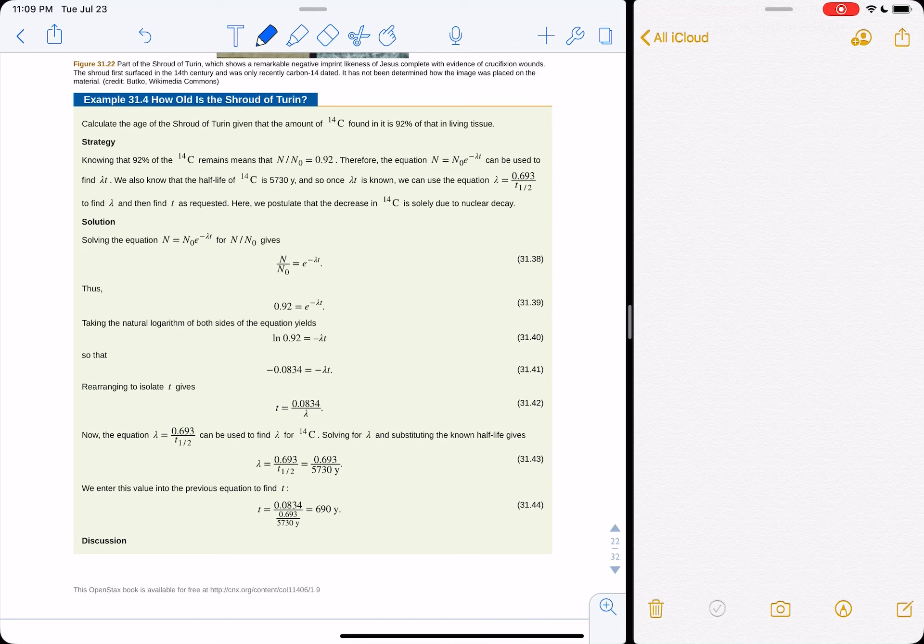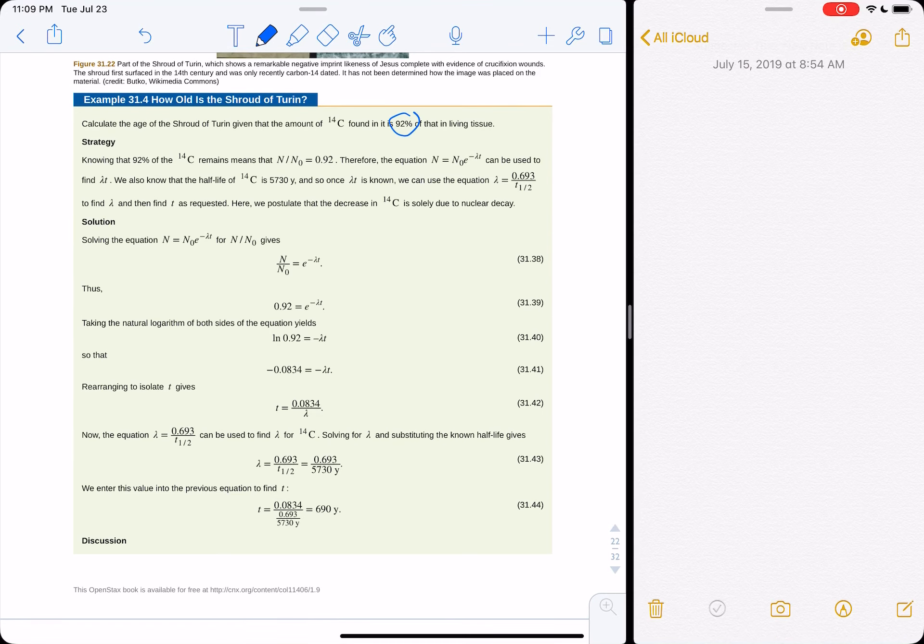So there was a sample that was cut out of this thing and it found that there was 92% of the carbon-14 was remaining. So if 92% is there, that means n over n0 is 92, or 0.92. So 92% of the stuff is still there. So then we can use this equation and we know the half-life of carbon-14 is 5,730 years, which means if we started with a pile of carbon-14, in 5,730 years we would actually have half of that amount.